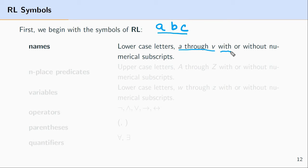We'll allow for subscripting positive integers to these names. So a sub 1 will be a name, a sub 2 will be a name, a sub 3 will be a name, and so forth and so on.